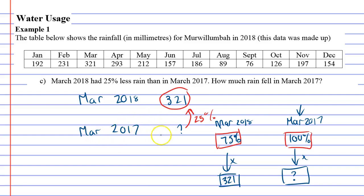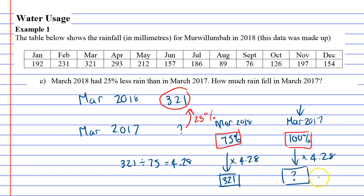It's as simple as going: what's 321 divided by 75? That comes out at 4.28, which means we're multiplying by 4.28. Now it doesn't hurt to check it — what's 75 times 4.28? It's 321, so we've got the right number. And 100 times 4.28 is 428.